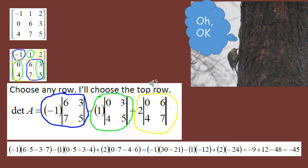Then I move on to 2. Two is back to being positive. Two gets paired with the 2x2 containing 0, 6, 4, 7. I find the determinant: zero times seven minus six times four. That gets multiplied by positive two. Going through that calculation, I get negative 45. So negative 45 is the determinant of this 3x3 matrix.